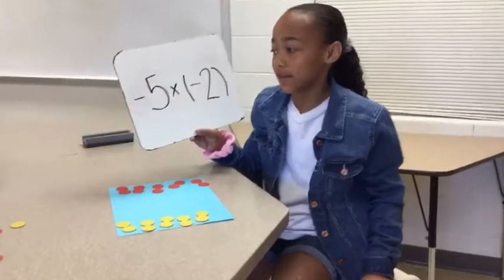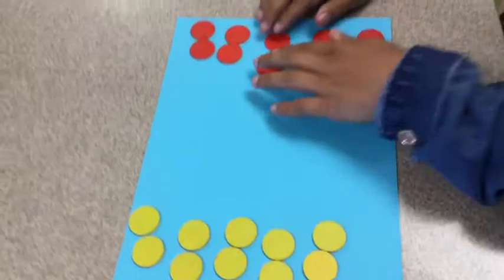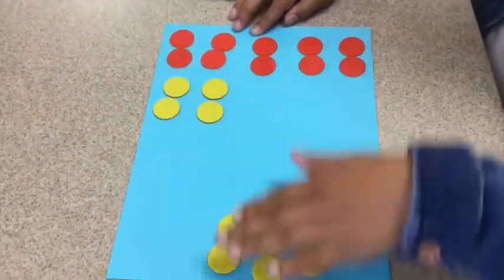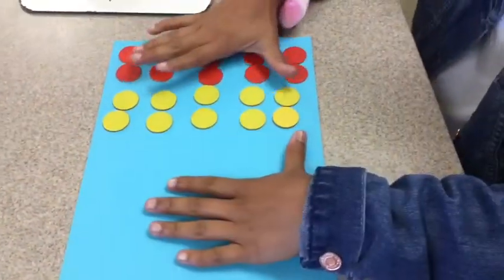So my next problem is negative 5 times negative 2. So we have 5 groups of negative 2. Then we have to add pairs of zero. And then you take away the negatives, and your answer is 10. Thanks for watching.